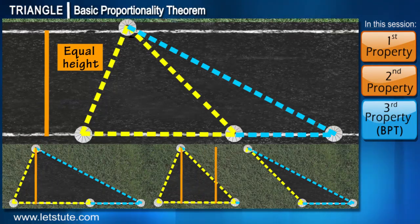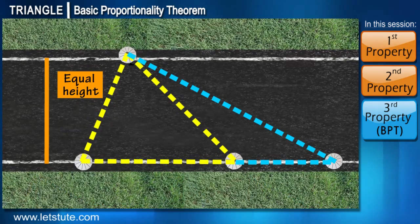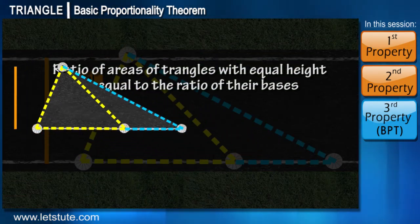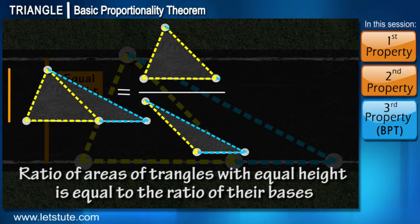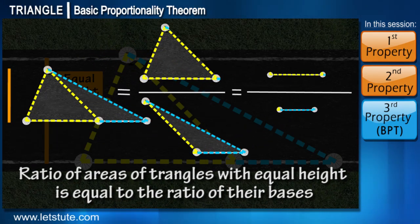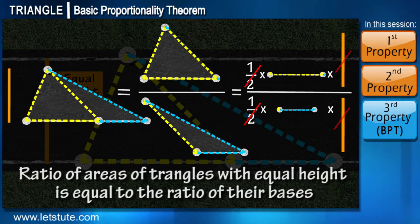When we find the area of these triangles, the areas will not be equal — but the ratio of their areas will be equal to the ratio of their bases, because when we take the ratio of areas, the constant value one-half and the equal height cancel out, leaving only the ratio of the bases.